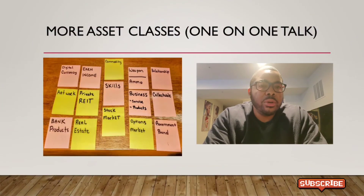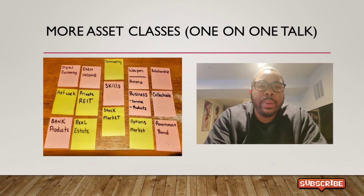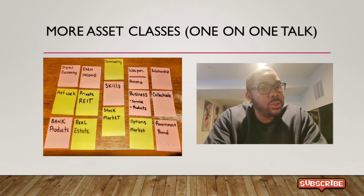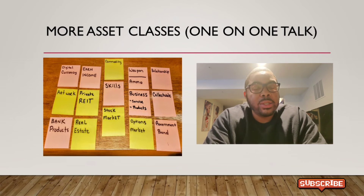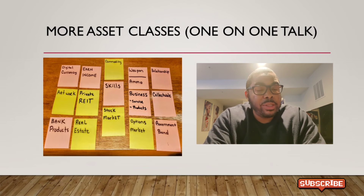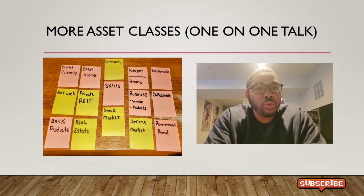Here are some examples of different asset classes: digital currency, artwork, bank products, earned income, private REITs, real estate, commodities, skills, the stock market, guns and ammo, businesses, options, relationships, collectibles, and government bonds. Those are all different asset classes we need to partake in. If you're about to retire and the big majority of your wealth is in the stock market, you may want to start investing in different asset classes so you can truly get diversified.